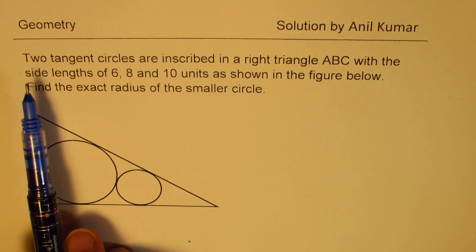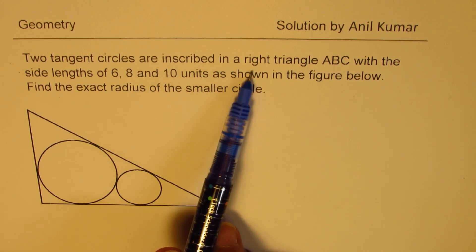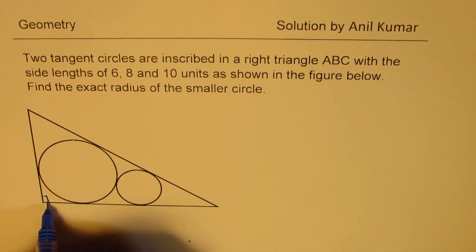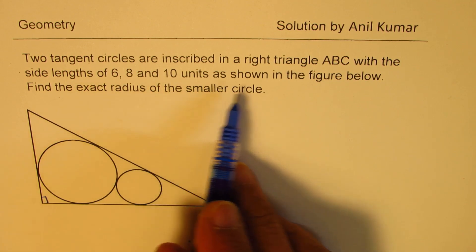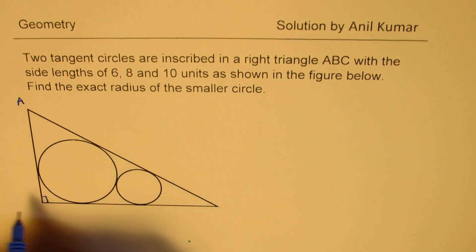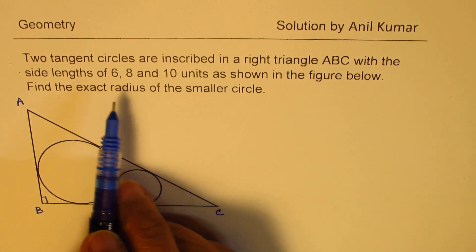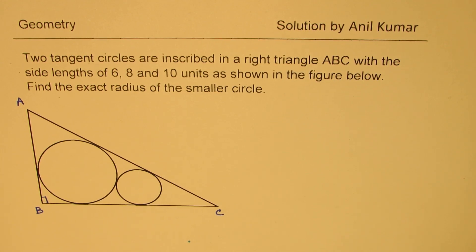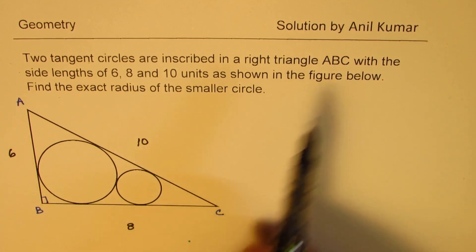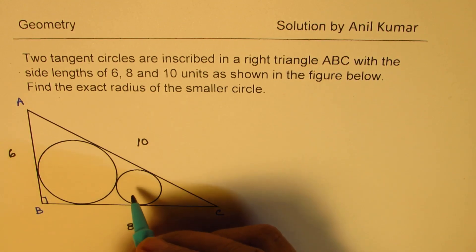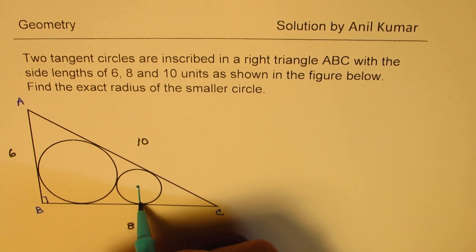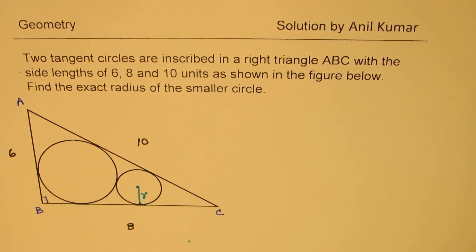The question here is: two tangent circles are inscribed in a right triangle ABC with side lengths of 6, 8, and 10 units as shown in the figure below. Let me write ABC here with 6, 8, and 10. Find the exact radius of the smaller circle — that is what we need to find, R.